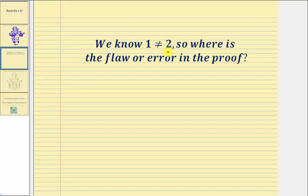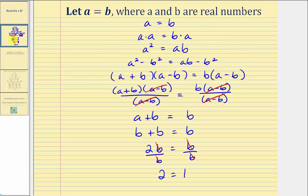But we know that one doesn't equal two, or two doesn't equal one, so where is the flaw or error in this proof? Let's go back over our proof and see if you can figure out where there's a flaw or error.